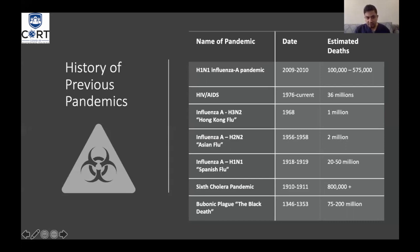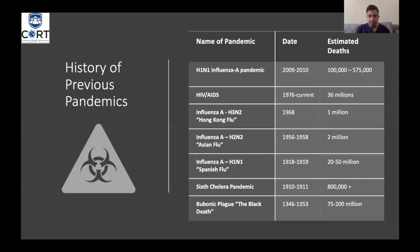This is not the first pandemic humans have faced. The last pandemic was the H1N1 influenza A pandemic in 2009–2010, which caused an estimated 100,000 to 500,000 deaths. Before that, the HIV pandemic started in 1976, is still ongoing, and has caused about 36 million deaths. The H3N2 Hong Kong flu of 1968 caused about 1 million deaths. The H2N2 Asian flu of 1956–1958 caused about 2 million deaths. The infamous H1N1 Spanish flu of 1918–1919 caused about 20 to 50 million deaths. Before that were the cholera pandemic and the bubonic plague, or Black Death.